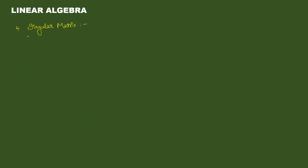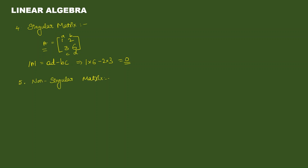Next — singular matrix. A square matrix is said to be singular if its determinant equals zero. For a 2x2 matrix, the determinant is AD minus BC. Example: determinant equals 1×6 minus 2×3 equals 0. Determinant is 0, so that is a singular matrix. A square matrix is said to be non-singular if its determinant is non-zero.